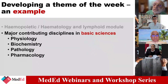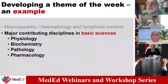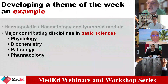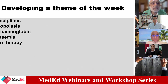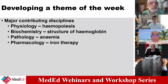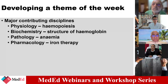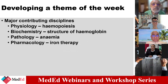We request those disciplines to give us the first three topics they would like to teach in this module. For example, physiology says they would teach hemopoiesis; biochemistry says they want to teach the structure of hemoglobin; pathology says anemia; pharmacology says iron therapy.